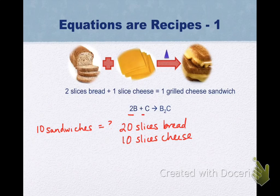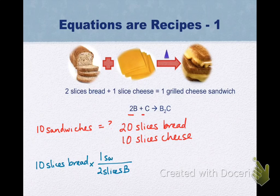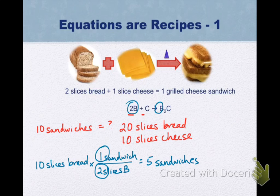I could also figure out if I had a given quantity of bread or cheese. Let's say, for example, that I have 10 slices of bread. Well this time I would know that 10 slices of bread times two slices of bread to one sandwich, I would be able to make five sandwiches. And so I'm using the ratio that I see in my chemical equation to start setting up conversion factors.